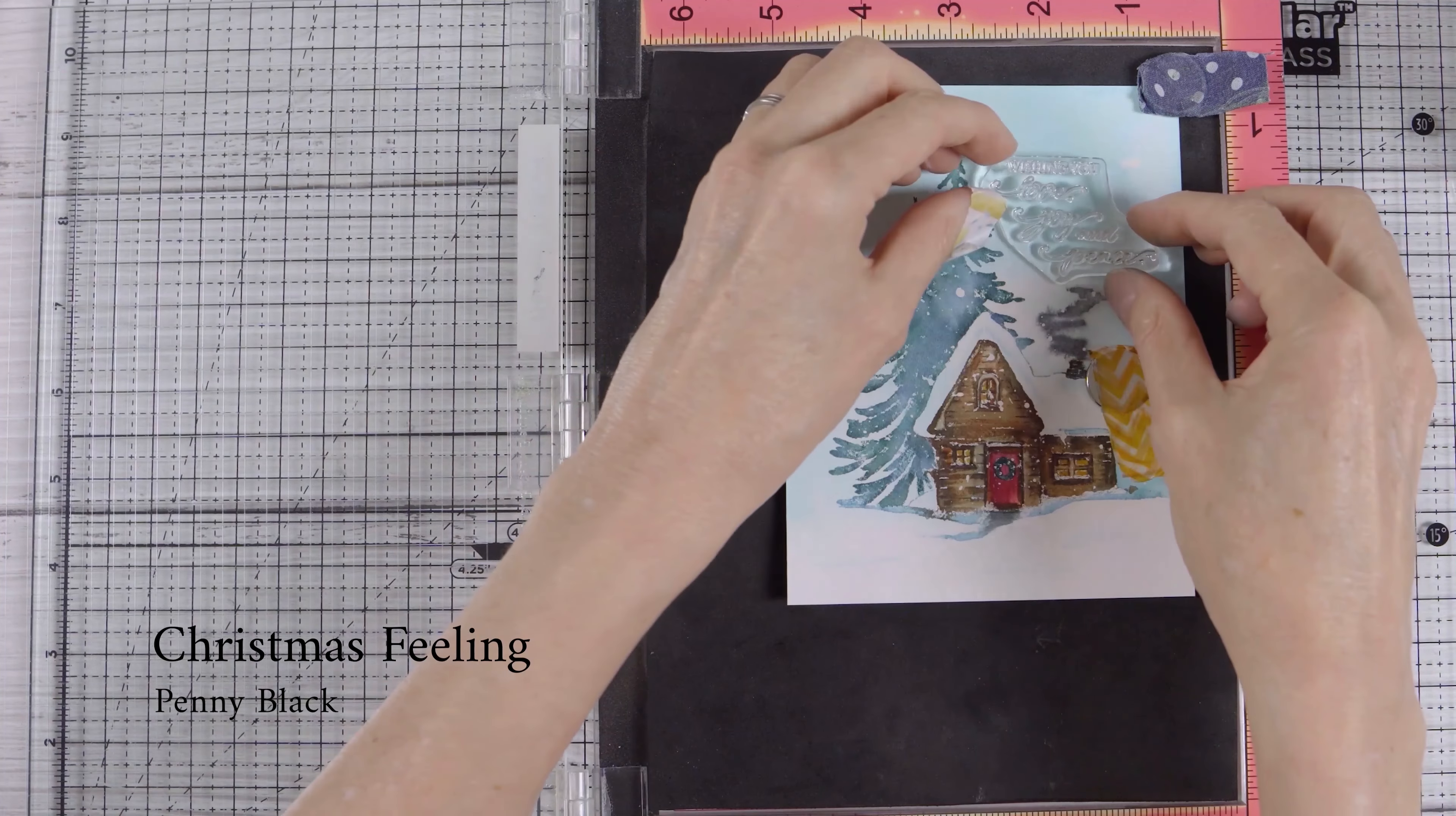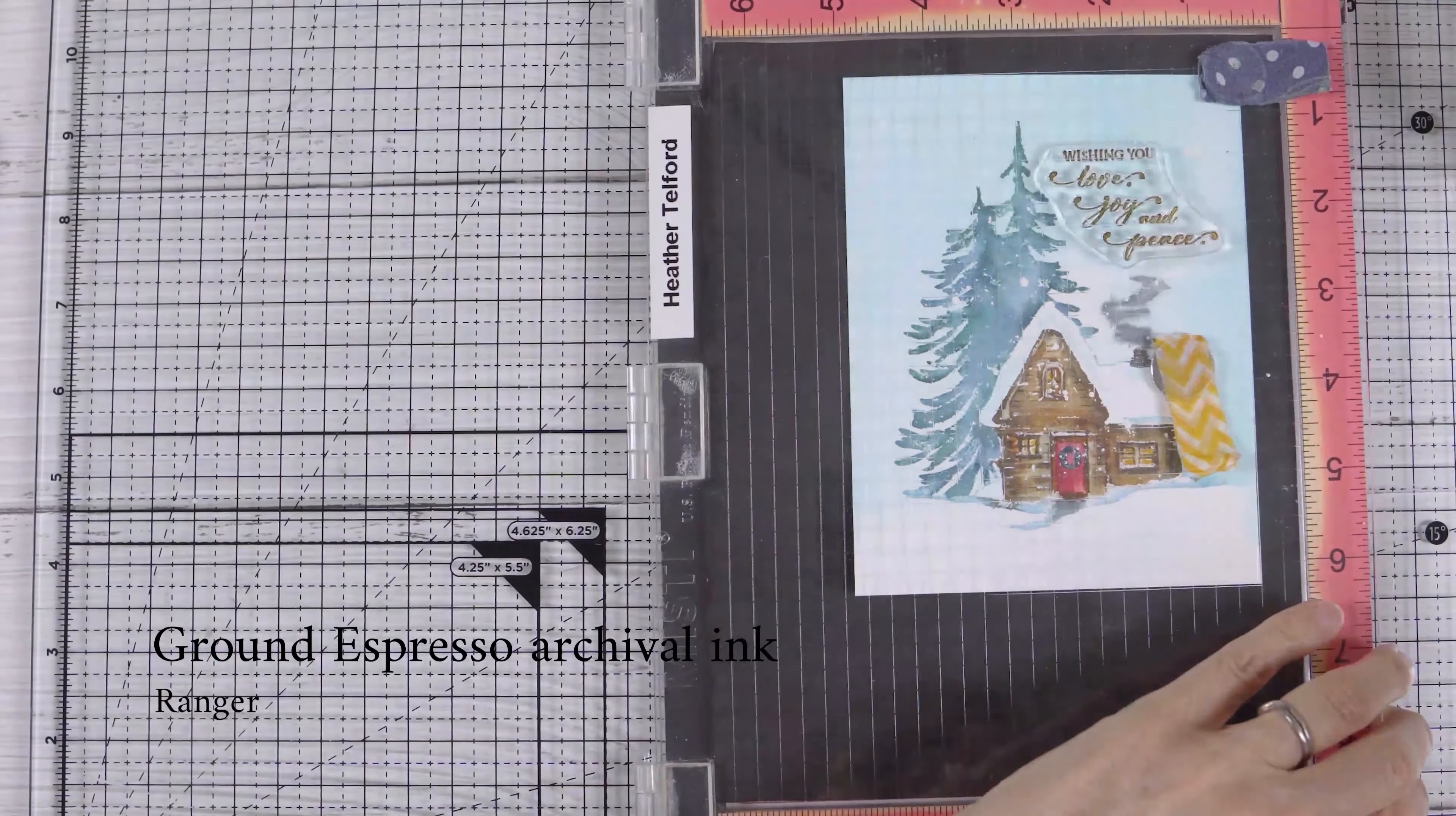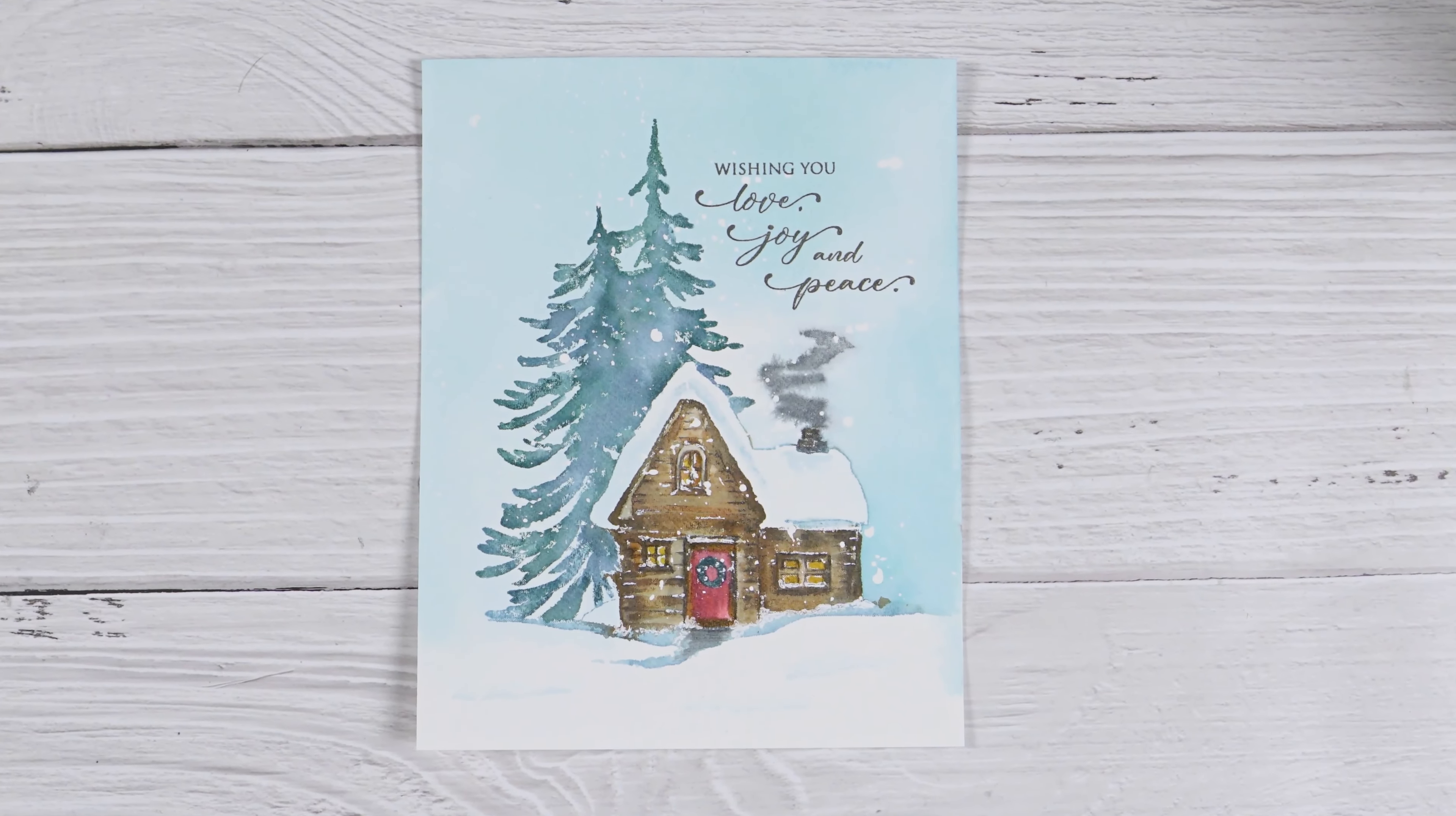I chose the sentiment from the Christmas feeling set which fits perfectly beside the trees, into that little space above the cabin. And I'm stamping that with Grand Espresso archival ink. When I stamp my sentiments, I try to choose a color that I've already used in the scene if I'm doing scenic stamping. So the Grand Espresso is like the dark brown mix of rusty hinge and black soot.